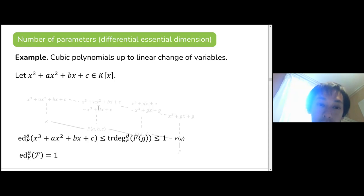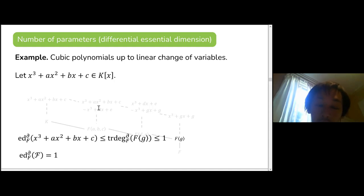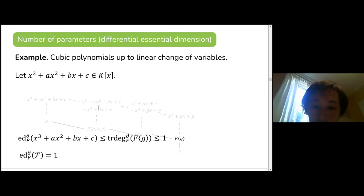For an individual object the differential essential dimension could be zero or one, but if you look at the general cubic — letting a, b, c be indeterminate — you can make the differential transcendence degree equal to one. So the entire class of cubic polynomials up to linear changes of variable has maximum complexity equal to one.